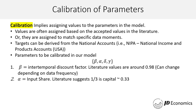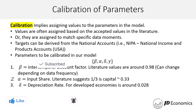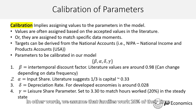The second parameter is alpha, the capital input share. The literature suggests one third, so we assign this a value of approximately 0.33. Delta is the depreciation rate; for developed economies it is around 0.028. You can look at the literature or the national accounts to find the depreciation rate applicable to your sample economy, depending on whether that data is available.